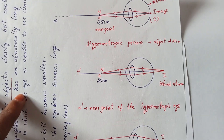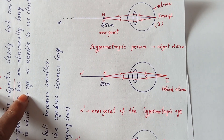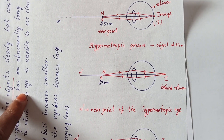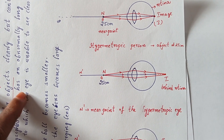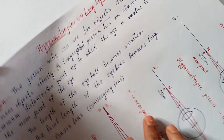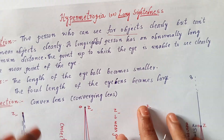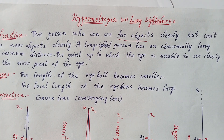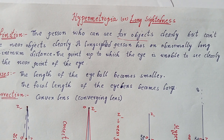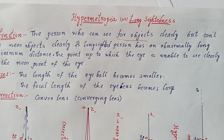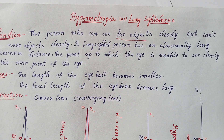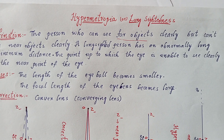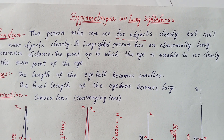N is the near point of the healthy human eye and N dash is the near point of the hypermetropic eye — label both clearly in your diagrams. I hope everybody understood hypermetropia and will be able to write this in the exam clearly. Thank you for watching. Please like the video, share with your friends and family studying class 10 CBSE, and comment if you have any more doubts in physics. Thank you.